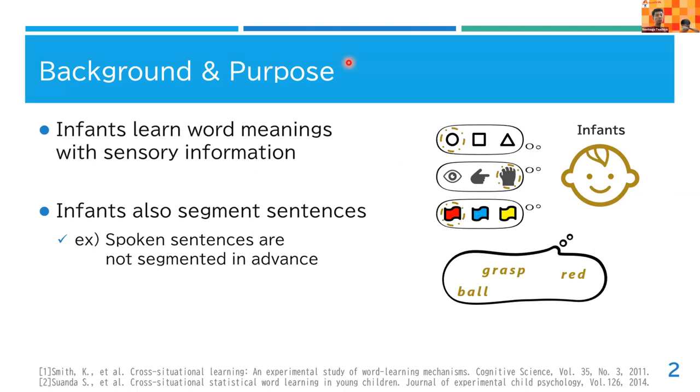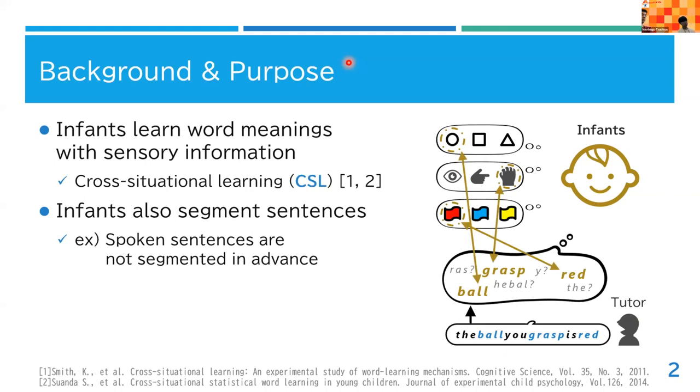In this study, we examine how infants acquire lexicons and their meanings. It is known that infants learn word meanings with co-occurrence of words and sensory information. This is called cross-situational learning.